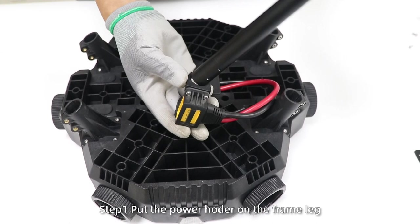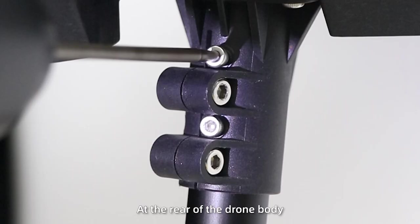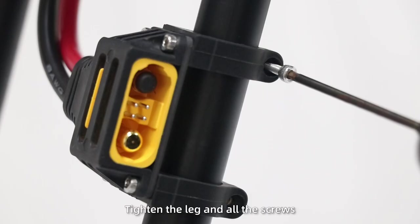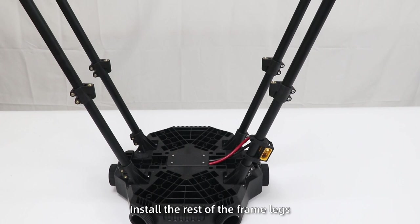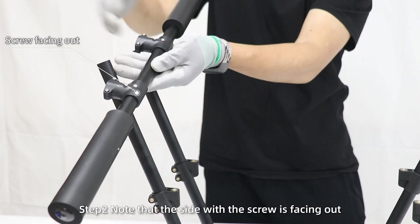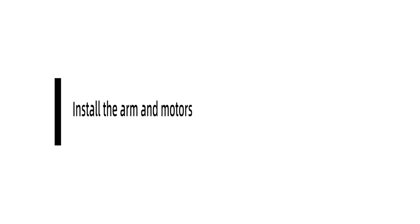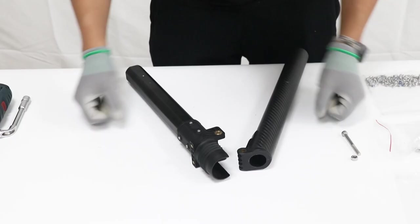Install the frame legs. Step 1: Put the power holder on the frame leg and insert it into the mounting seat at rear of the drone body. Tighten the leg and all the screws. In this way, install the rest of the frame legs. Step 2: Note that the side with the screw is facing out. Insert the leg support rails and tighten the screws.